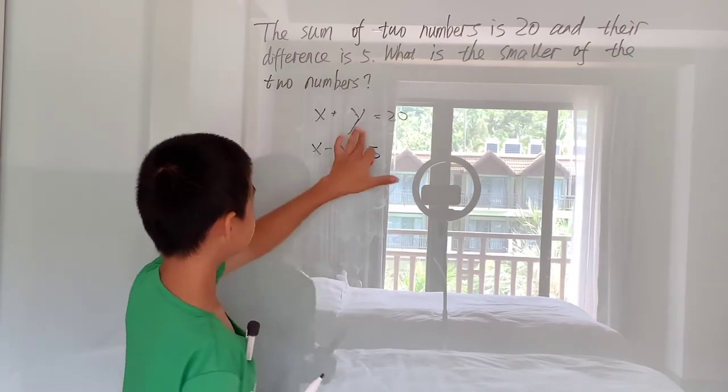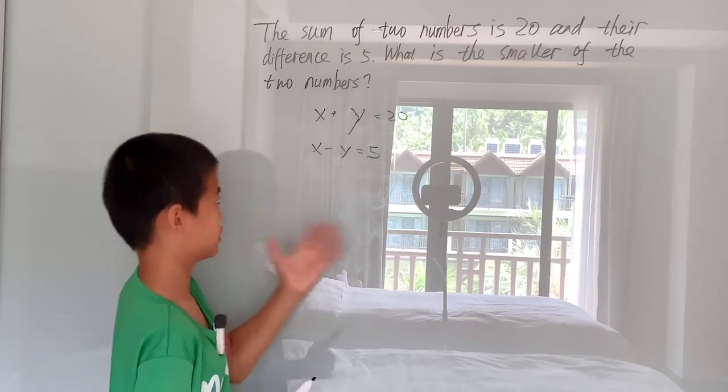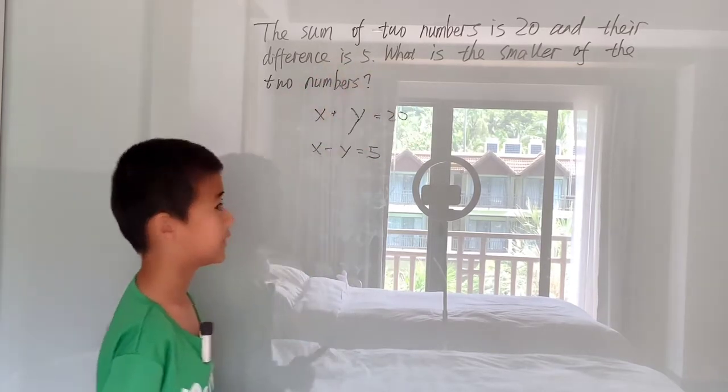So basically you want x and y and then whatever is the smaller one, x or y, and then you just want to write that on the answer.